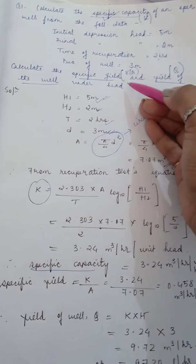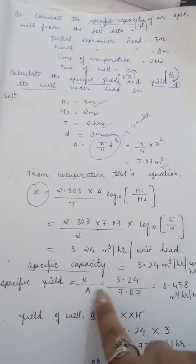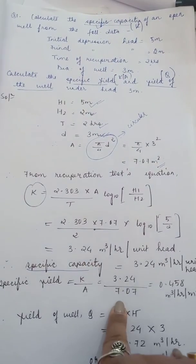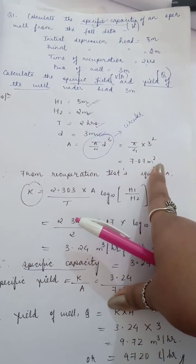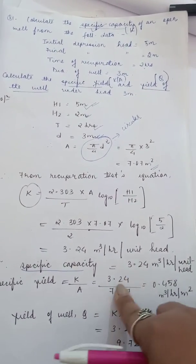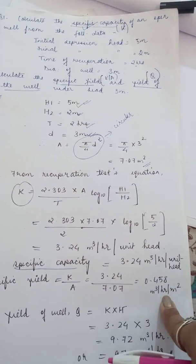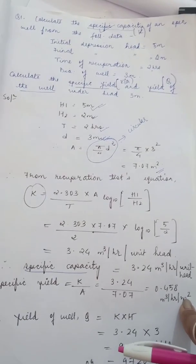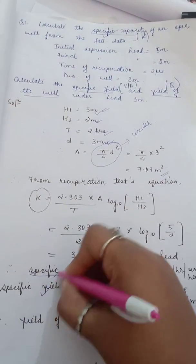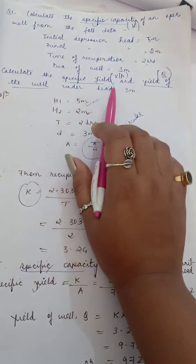Now we're asked to find the specific yield, which is K/A. K is 3.24, area is 7.07. After putting these values we get 0.458 meter cube per hour per meter squared. Please do not forget to mention the unit, it is very important.